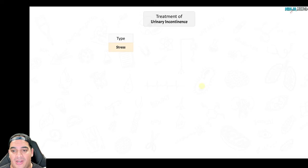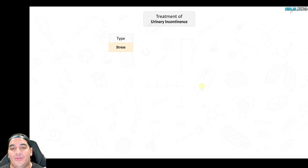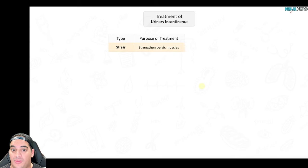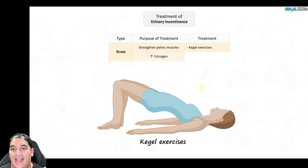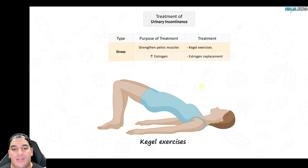For treatment of stress incontinence: the patient has a weak pelvic floor and increased intra-abdominal pressure. You can't stop coughing or sneezing, and weight loss helps with obesity. The main approach is strengthening the bladder outlet — Kegel exercises are the best way to strengthen pelvic muscles. If weakness is related to low estrogen in menopausal patients, estrogen creams can increase elasticity and strength of those muscles.